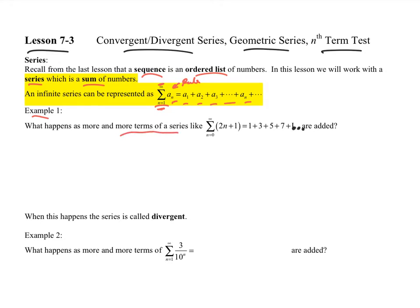What happens as more and more terms of a series like this gets added together? And so if I write out each one of these, I'm going to start at n equal to 0. Plug in 0, you're going to get a 1. Plug in 1, you're going to get a 3. Plug in 2, you're going to get a 5. Plug in 4, you're going to get a 7.